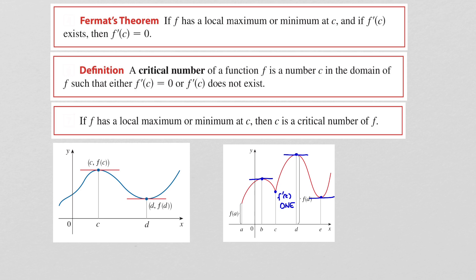If f has a local maximum or minimum at c, then c must be a critical number of f. Please understand that this does not say that a critical number always gives you a maximum or a minimum. Rather, it says if you have a maximum or a minimum, it must occur at a critical number. So finding critical numbers is very important because if you have local maximums and minimums, that is where they will occur.